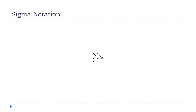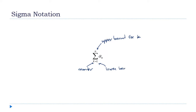Before we talk about how we're going to find the exact area, we need to talk about a new notation. You may have seen this before. This is called sigma notation — that big symbol in the middle is a capital Greek letter sigma. It has a couple of pieces: k, which is like a counter, n on top as the upper bound for k, and the lower bound below. In area problems there's almost always a one there, but theoretically it could be another number.